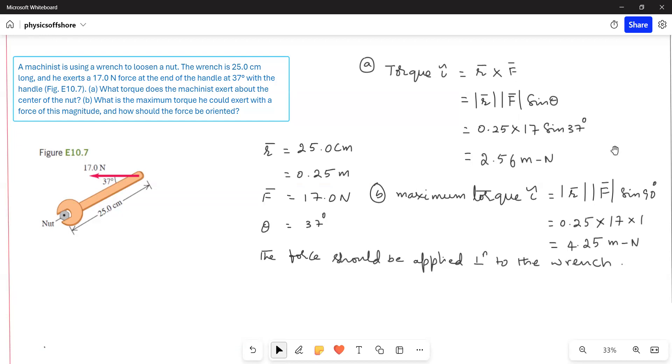Next, part B. What is the maximum torque he could exert with a force of this magnitude? Maximum torque means when theta is 90 degrees, we get the maximum torque. That is the clue here.